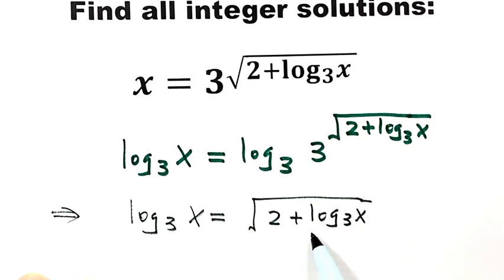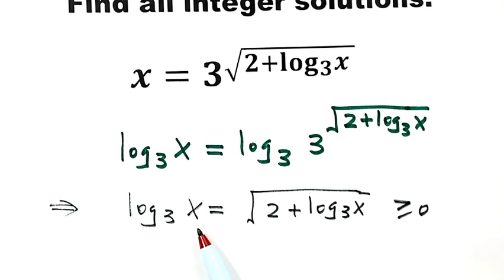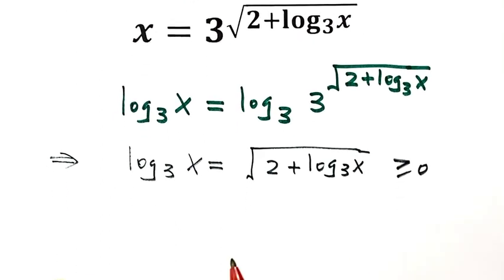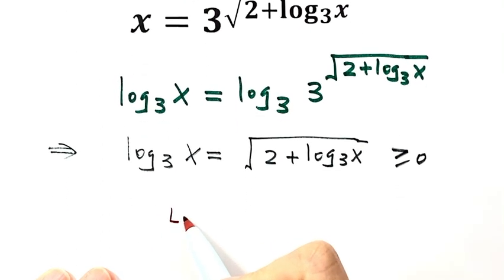Because this is a square root, it's always bigger than or equal to 0, so log base 3 of x is bigger than or equal to 0. Since we have log base 3 of x appearing twice, we're going to introduce a new variable. Let y equals log base 3 of x.